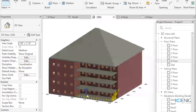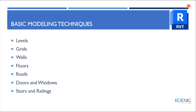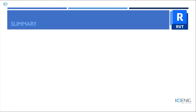You can add roof, railings, stairs, ramps, and many more elements. We've seen the core elements: levels, grids, walls, floors, doors, windows, stairs, and railings. There are many more things you can do in Revit beyond what was shown today.